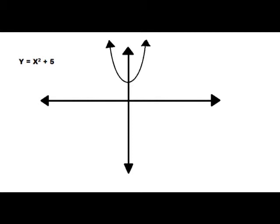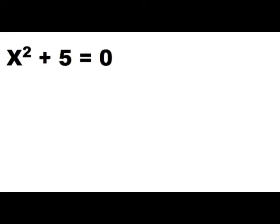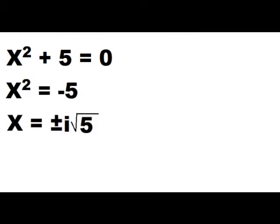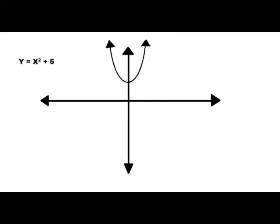Third equation: x squared plus five. Just by looking at this equation, you can see that the graph is moved five units up — it doesn't look like it's gonna have any zeros. Let's find out: x squared plus five equals zero, so x squared equals negative five, and x equals plus or minus i times the square root of five. It's imaginary, so it's not going to appear on the graph. We don't have any zeros.